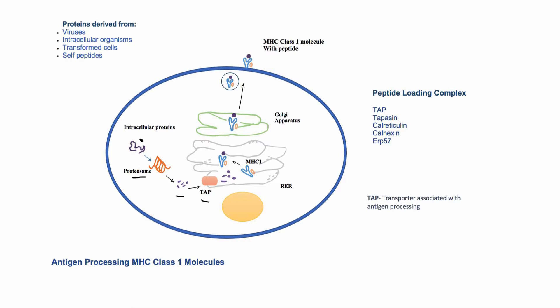HLA class 1 molecules are synthesized in the endoplasmic reticulum and then a peptide is loaded on these molecules, from where they pass to the Golgi apparatus, and from the Golgi apparatus they are passed to the cell surface in vesicles. Finally, HLA class 1 molecules are presented on the cell surface with peptides derived from intracellular proteins, where they are recognized by CD8 T cells.